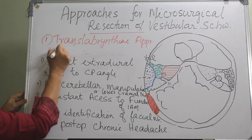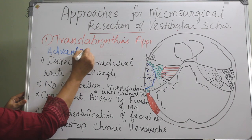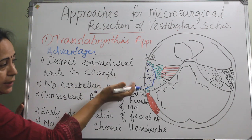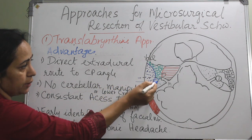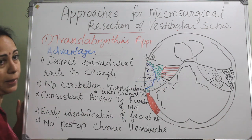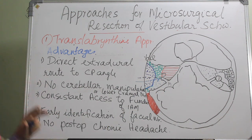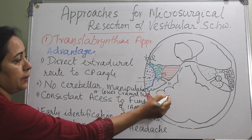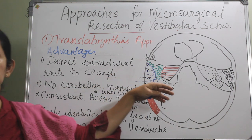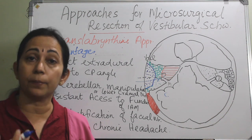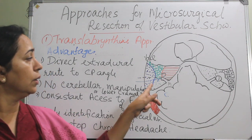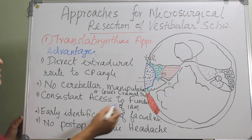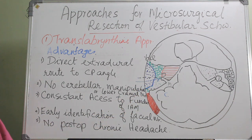Advantages: We go through a post-aural trans-mastoid approach directly into the internal acoustic meatus or the CPA angle. This is a direct extradural route to the CPA angle. We are not retracting or manipulating the cerebellum or the lower cranial nerves at all. This is also a consistent axis to the fundus of the internal acoustic meatus, which is located at the lateral end.